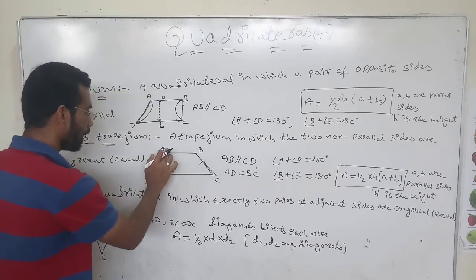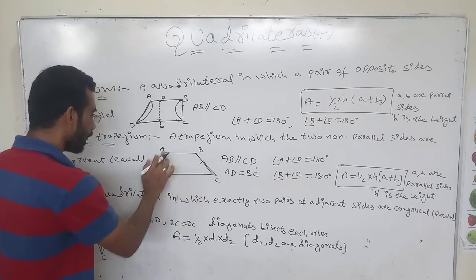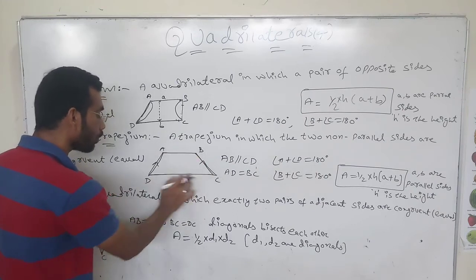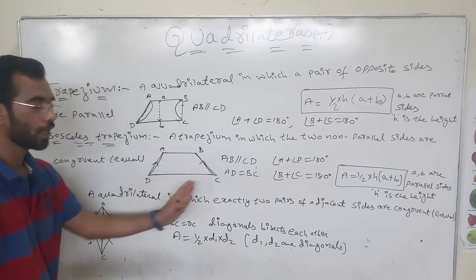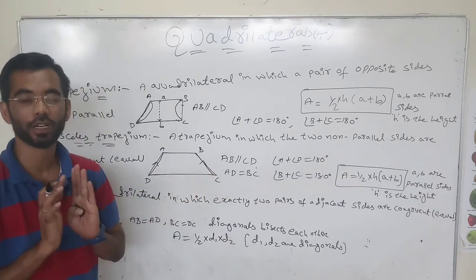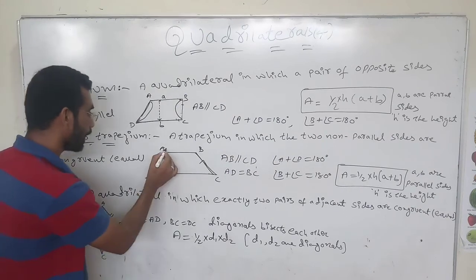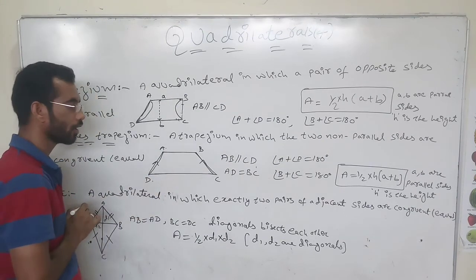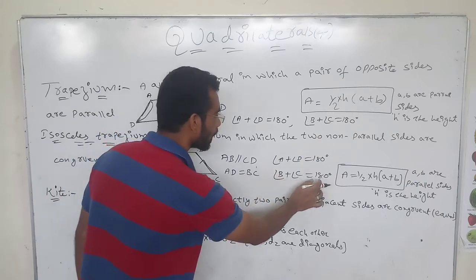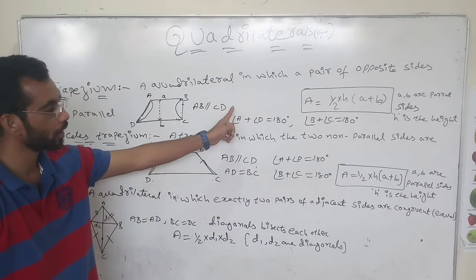In an isosceles trapezium, AB is parallel to DC, and the non-parallel sides AD is equal to BC. These two sides are equal but they are not parallel. And the angle property remains the same: angle A plus angle D equals 180 degrees.